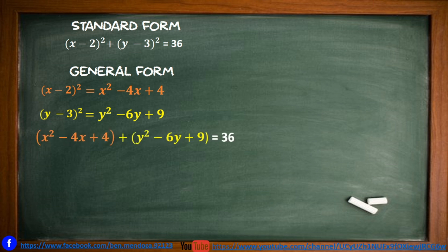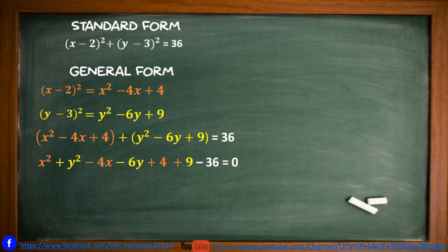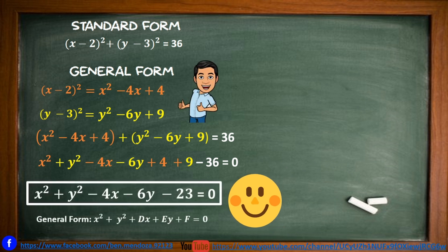Next, we combine the results: x squared minus 4x plus 4, plus the quantity of y squared minus 6y plus 9, is equal to 36. We remove the parentheses and follow the format of the general form, giving x squared plus y squared minus 4x minus 6y plus 4 plus 9 minus 36 equals 0. Combining the constants: 4 plus 9 minus 36 gives the final answer x squared plus y squared minus 4x minus 6y minus 23 equals 0.